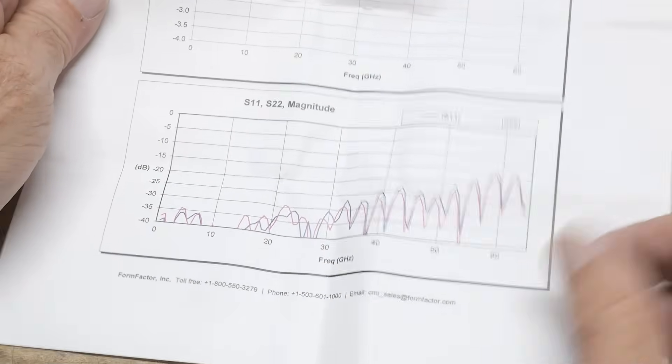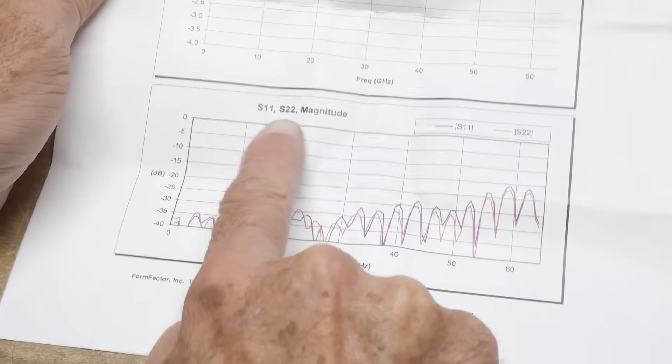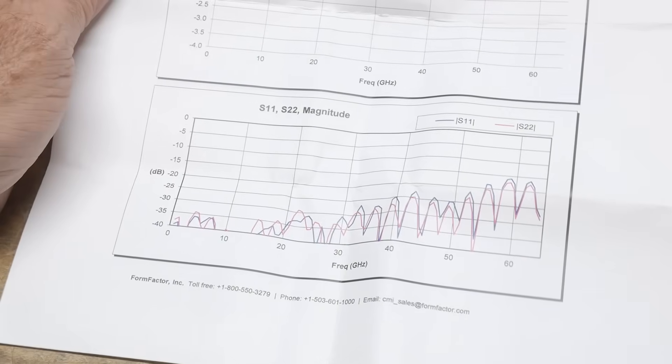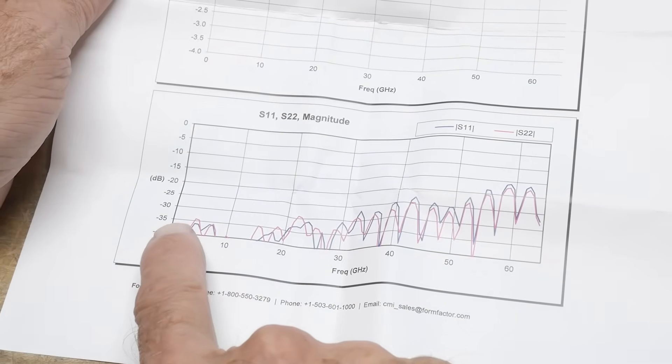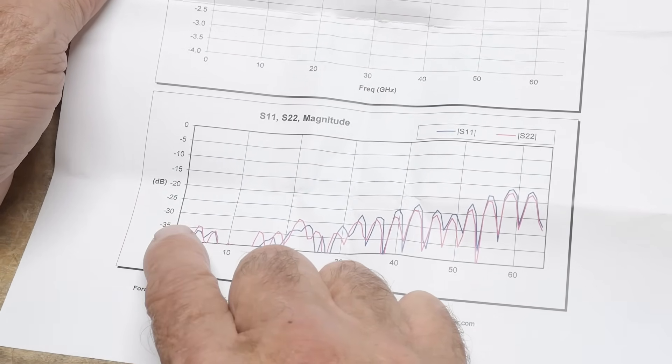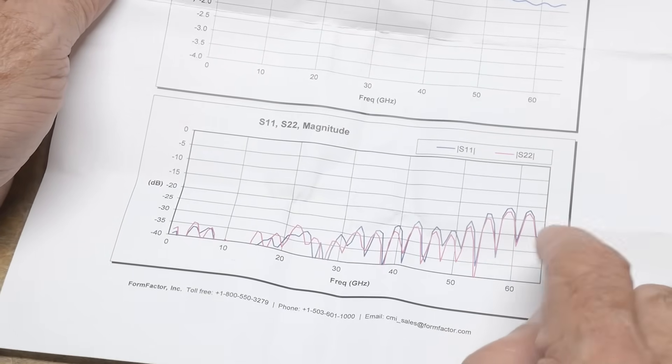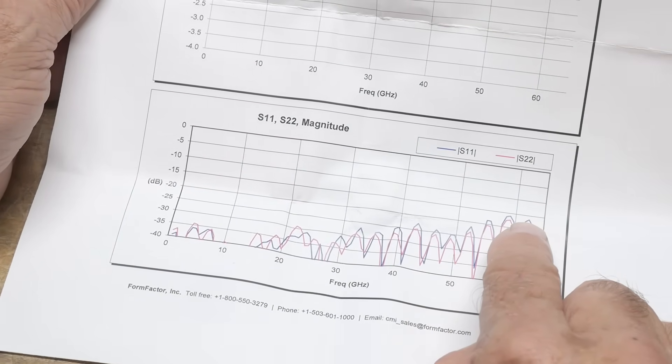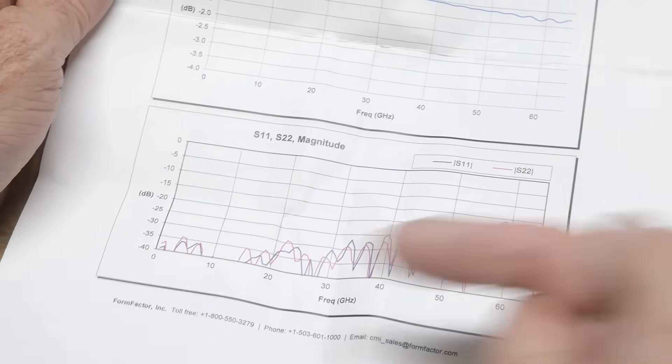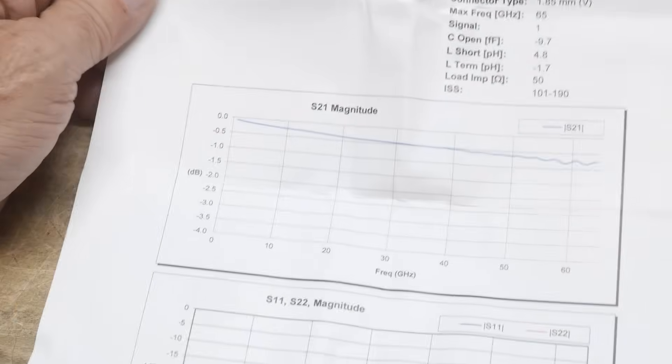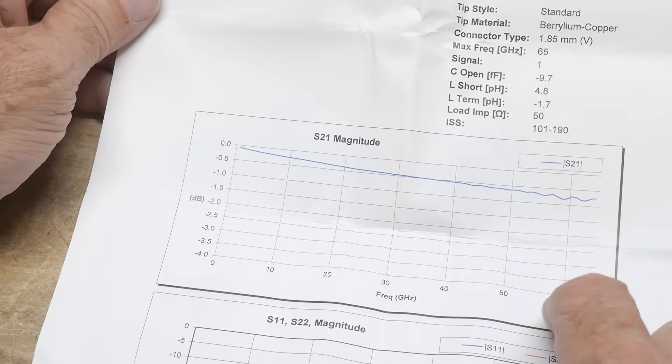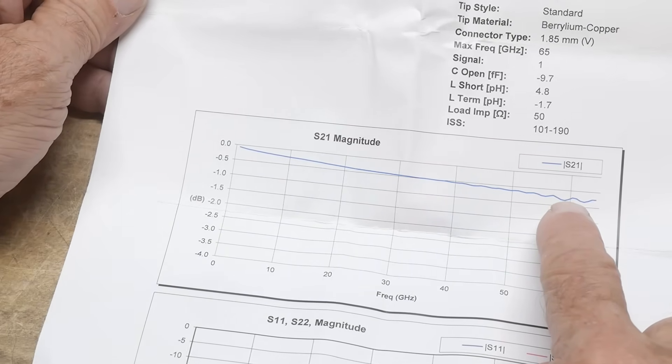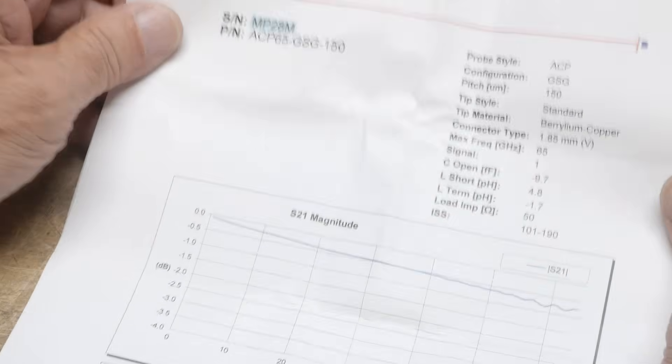This particular probe comes with an actual graph. This is actual measurements of that probe. Here is the S11 and S22. I don't know how they measure the S22, they must have their own fancy test fixture to go the opposite way. You can see here we're getting 35 dB reflection. The worst case up here around 60 gigahertz, worst case it's around -18 maybe. You can see the little wobbliness because of the length of the coax stub that you have. Then here is the actual S21, which is the through measurement, and you have at the very worst 0.8 dB loss. That's pretty amazing.